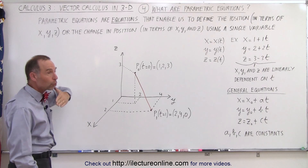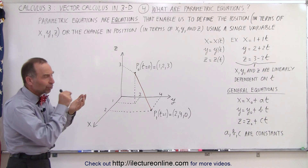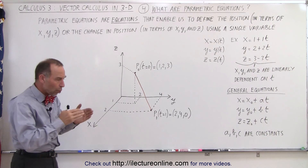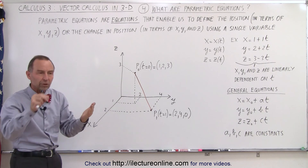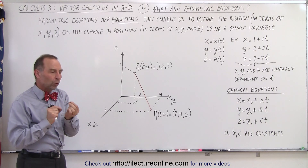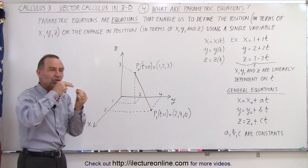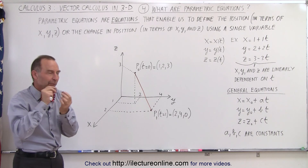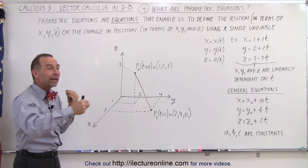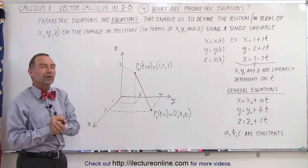Parametric equations are equations that enable us to define the position of a point in three-dimensional space in terms of x, y, and z, or the change in position from one point to another point, by defining just a single variable. So a value for that single variable will define a point in space, and a change in that single variable will change the position of that point — moving to a new point in space — so x, y, and z will change by the change of that single variable.